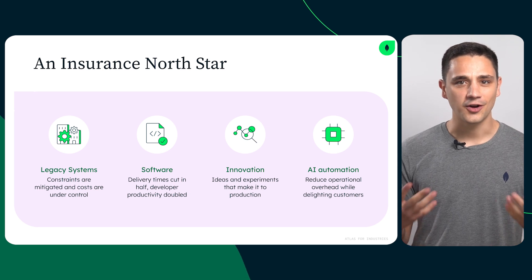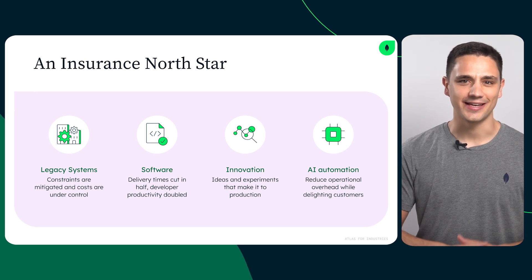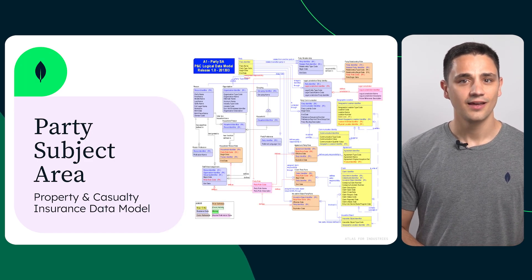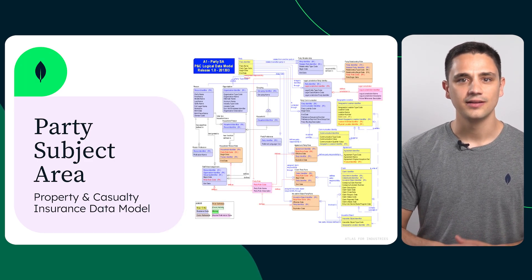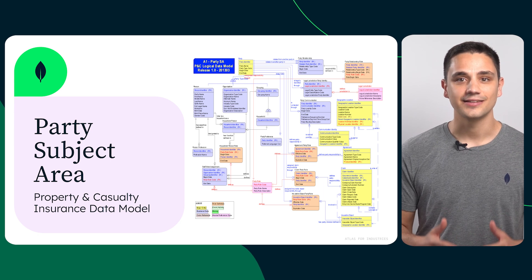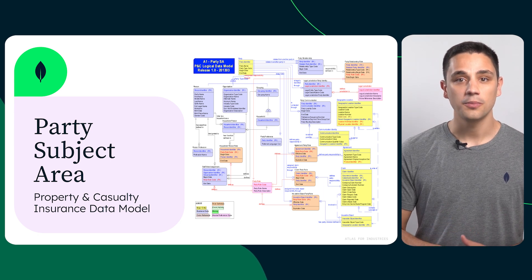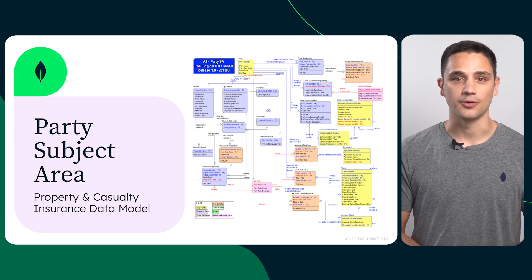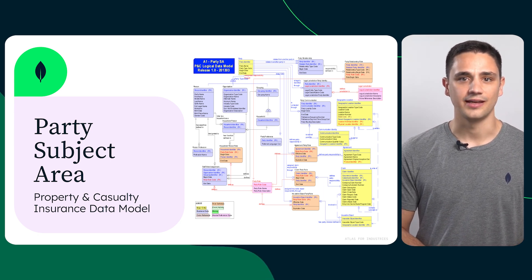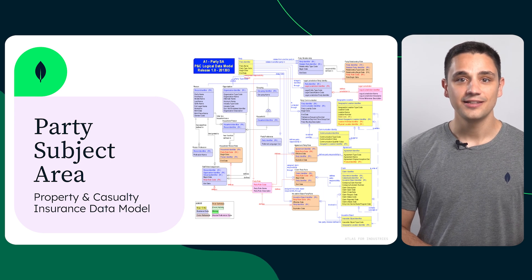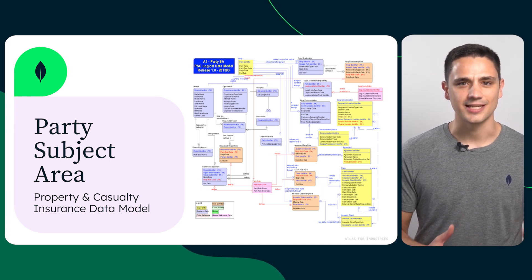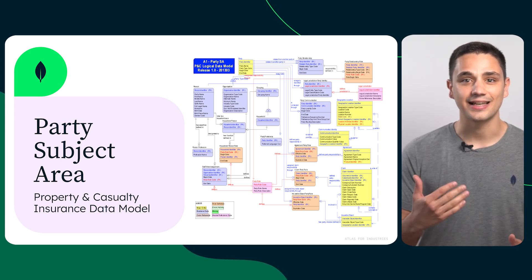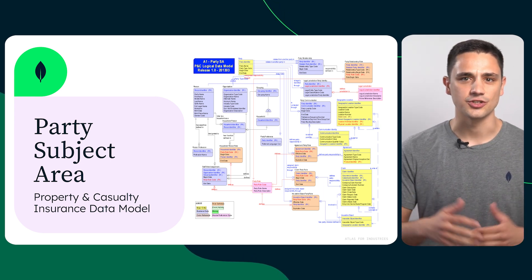Let's see an example of a common insurance data model. The Party Subject Area Model, or Party Role Model, is a standard defined by the Object Management Group, widely adopted in the insurance industry. It defines how parties are related to entities such as policies, claims, and litigations.